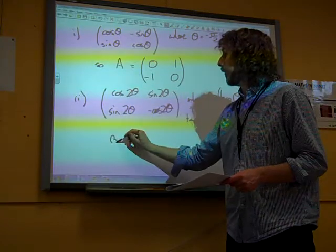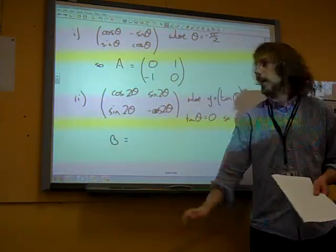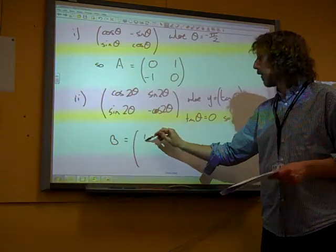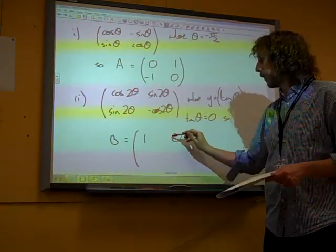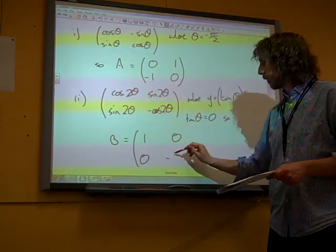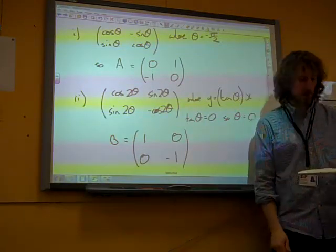So the second answer that we want is cos of 0, which is 1, sin of 0, which is 0, sin of 0, and minus the cos of 0, gives us 1, 0, 0, minus.